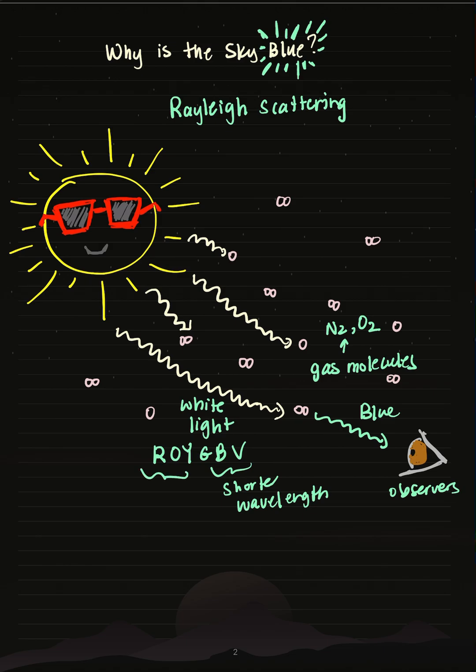These longer wavelengths, like red, orange, and yellow, don't tend to get scattered as much. Maybe during sunsets, but during the day, blue is scattered, causing us to see blue.